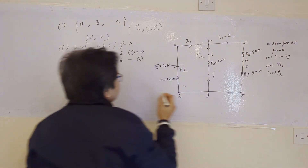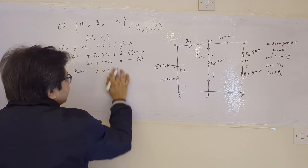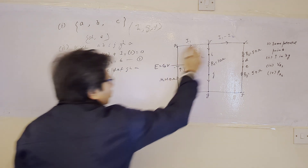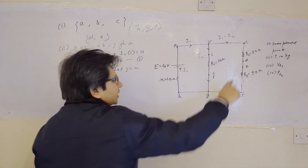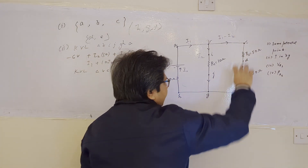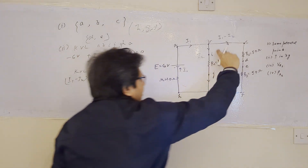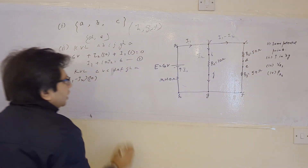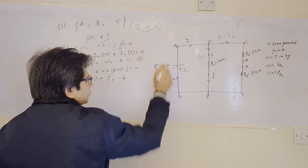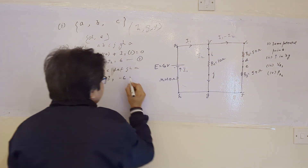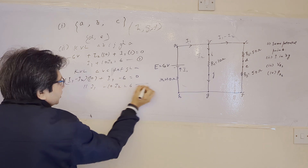Similarly, applying KVL in the outer loop A-B-C-D-E-F-G-H-A: the current through R2 and R3 is I1 minus I2, and since R2 and R3 are in series their combined resistance is 10 ohms, giving (I1 − I2) × 10. Then current I1 flows through the 1-ohm resistor giving I1, and the battery gives minus 6 volts. Setting the sum equal to zero gives: 11·I1 − 10·I2 = 6. This is equation number two.